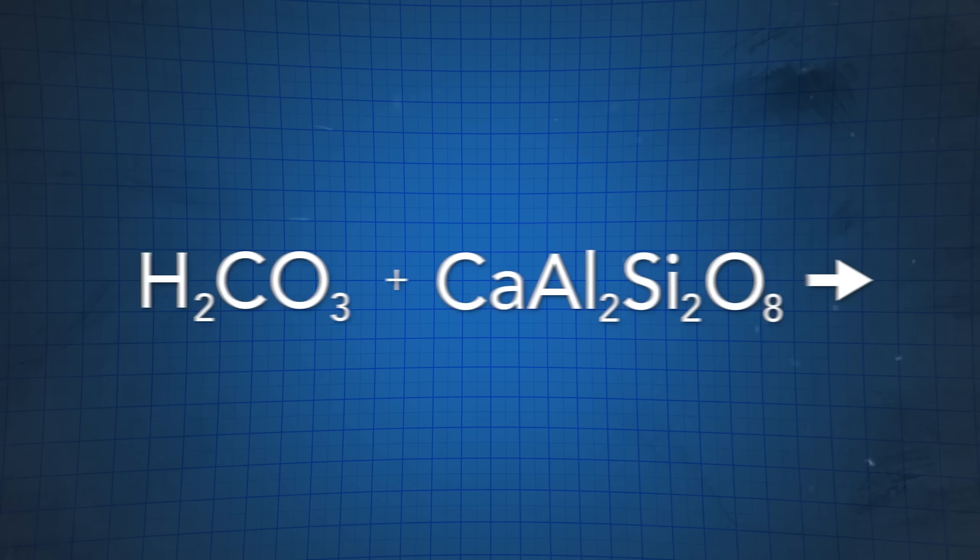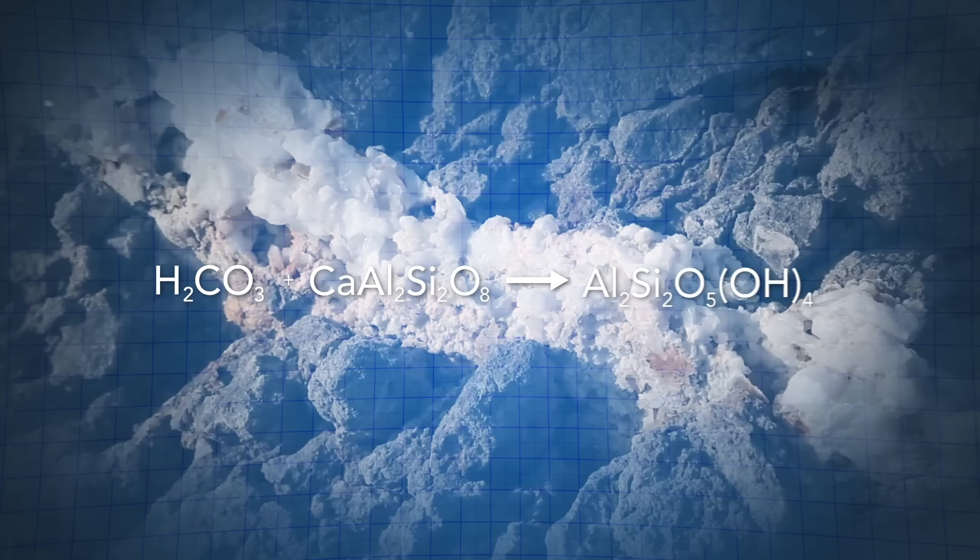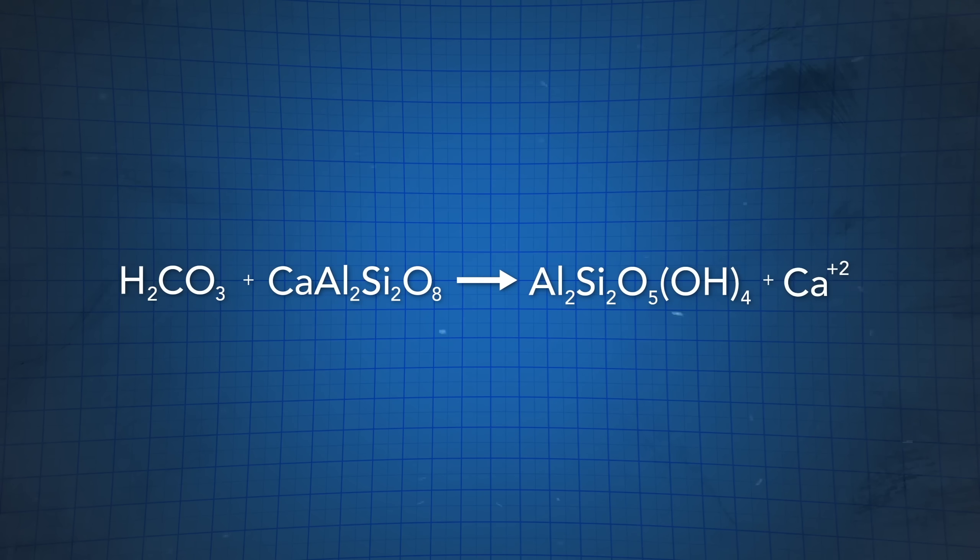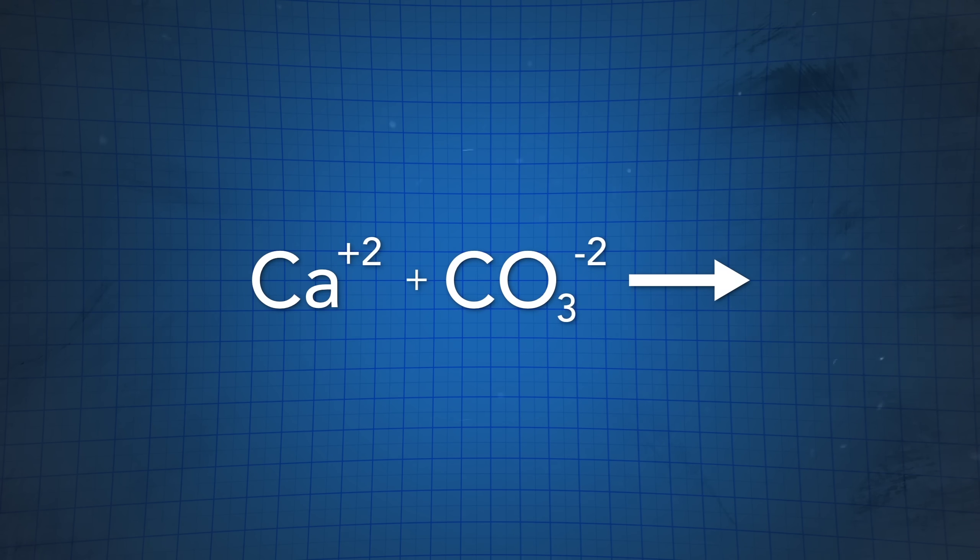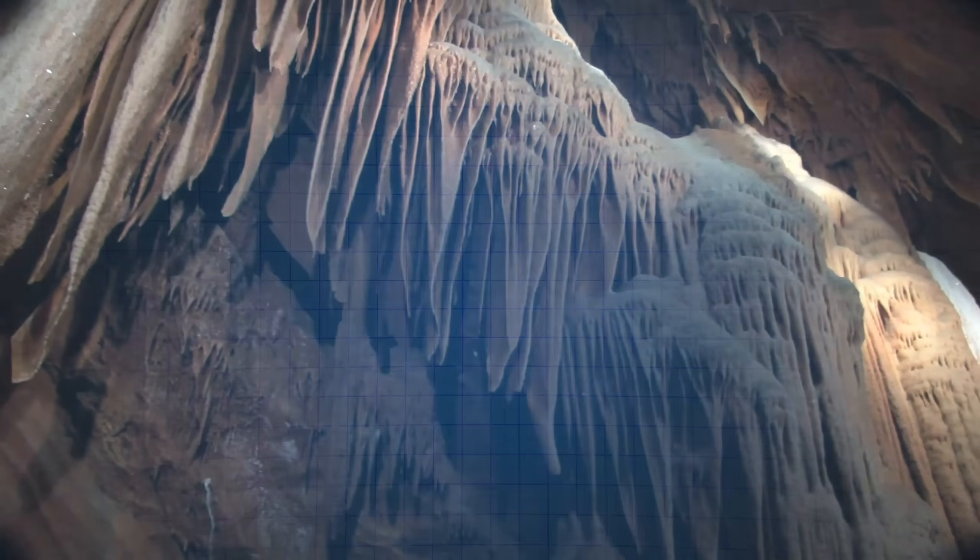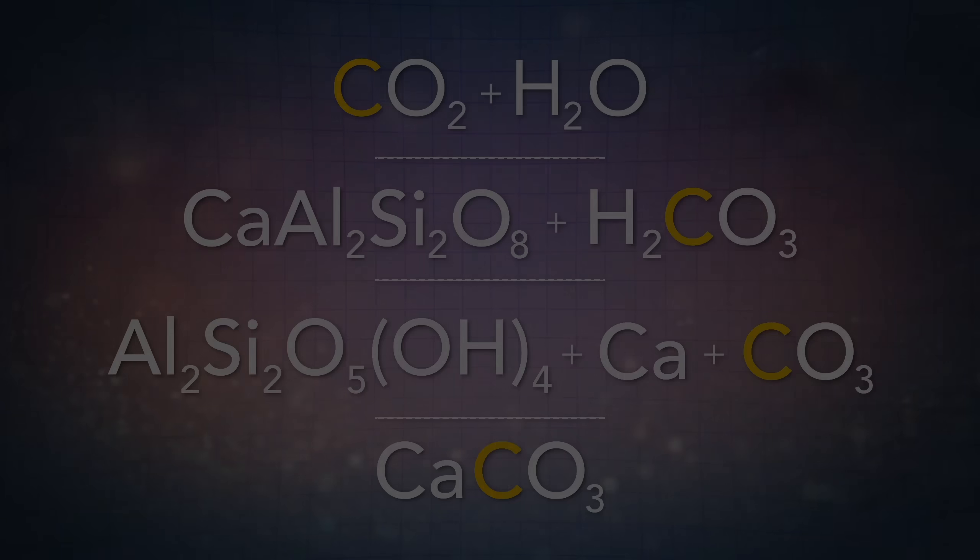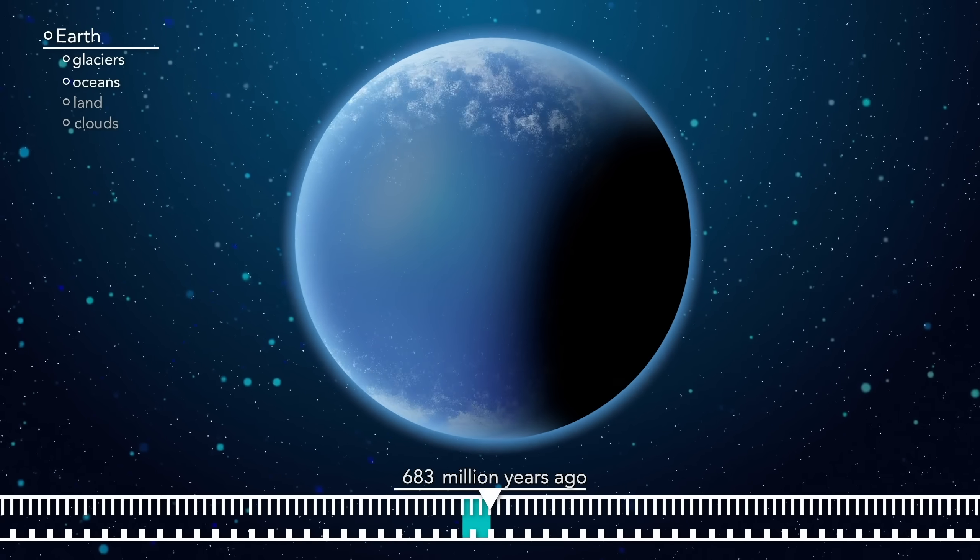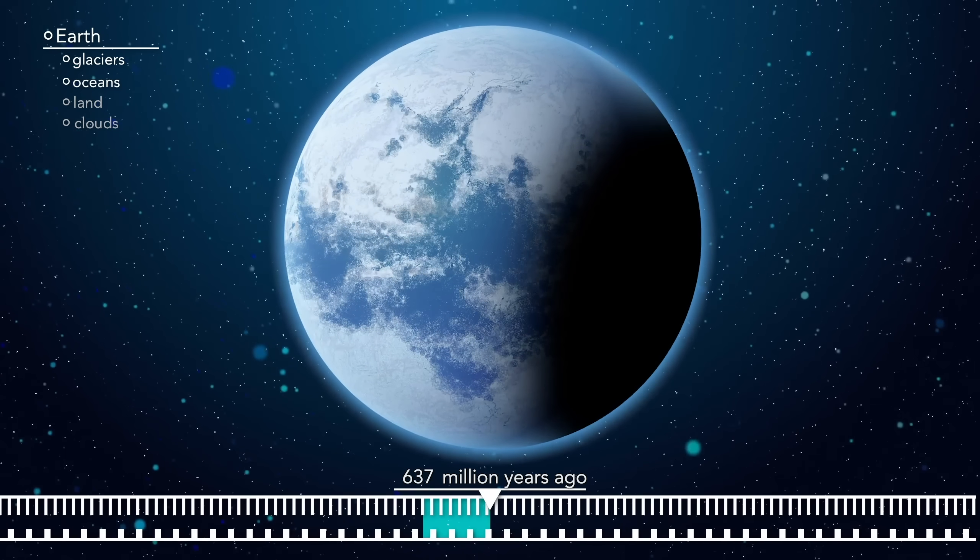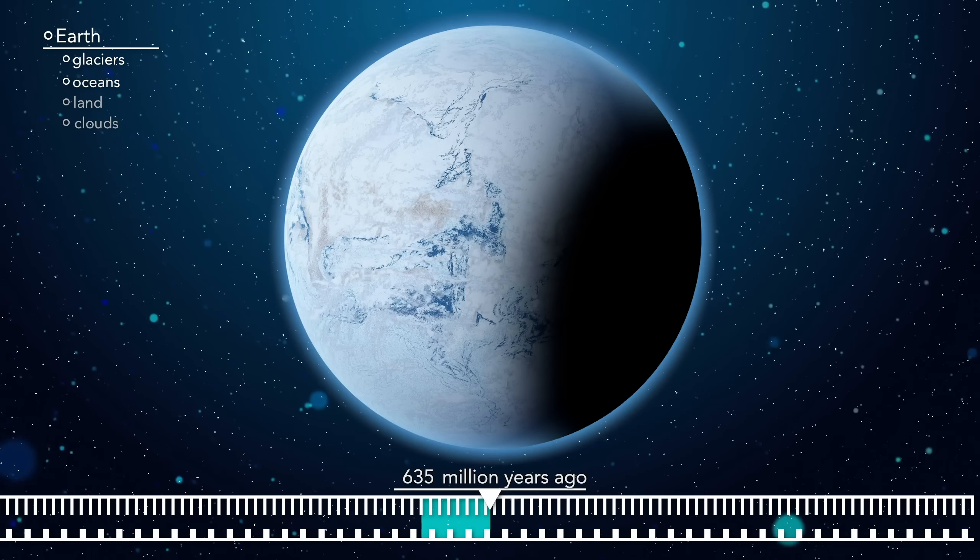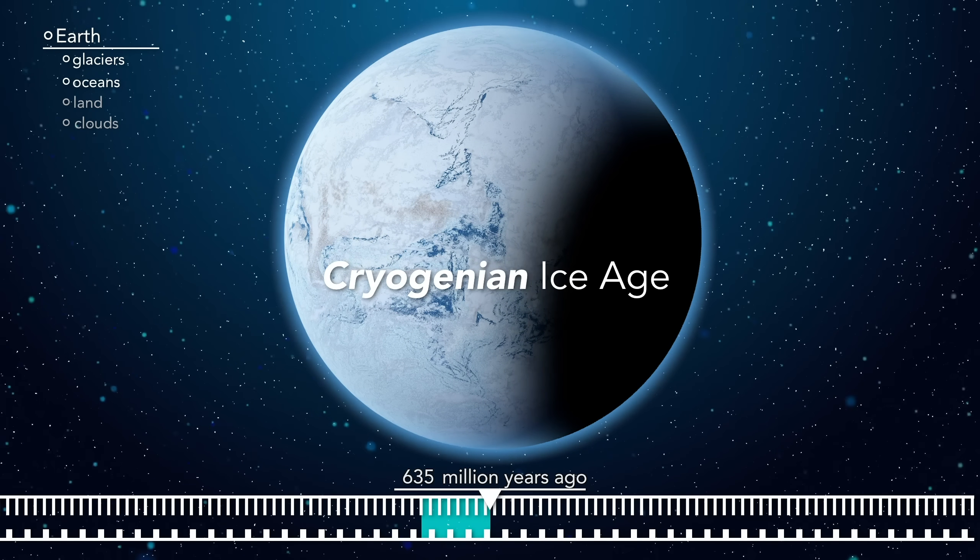What this does is alter the feldspar into what's known as kaolinite, while producing calcium and carbonate ions, which react to form calcium carbonate, another rock. What this means is that the formation and weathering of new rocks can actually draw carbon dioxide out of the atmosphere and lock it away into new rock. And shortly after, as a result, Earth entered into the most severe glaciation event in history, the Cryogenian Ice Age.